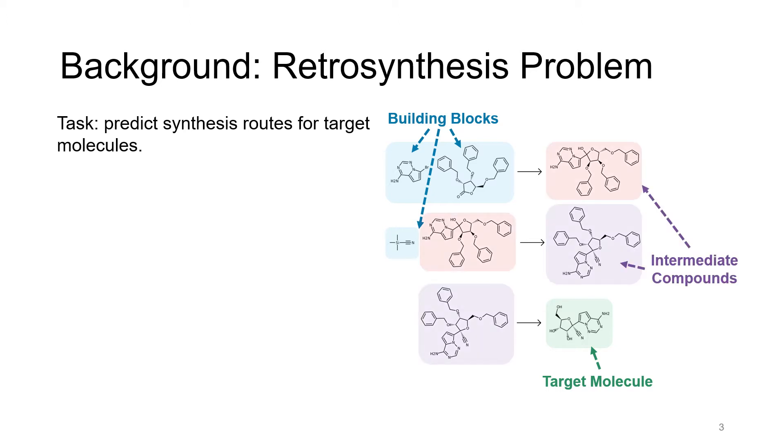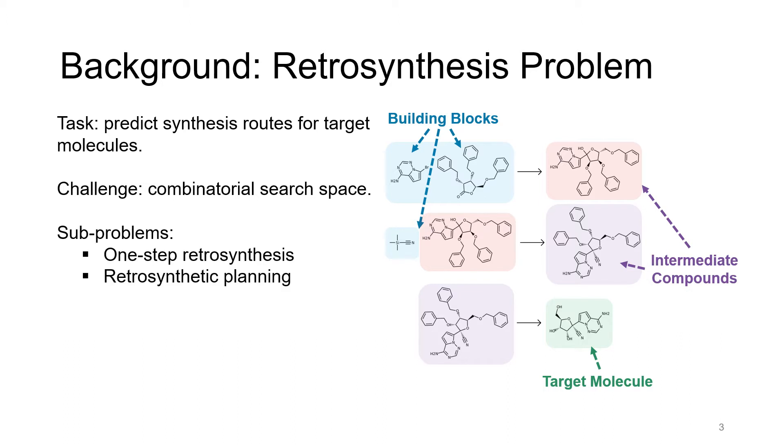To synthesize the target molecule, we can first produce some intermediate compounds using chemical reactions from the building blocks. And then finally, with these intermediate compounds, we're able to arrive at the target molecule. This problem is challenging because it involves planning in a combinatorial search space. To solve this problem, we usually decompose it into two sub-problems, which is one-step retrosynthesis and multi-step retrosynthetic planning.